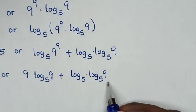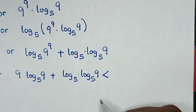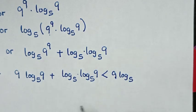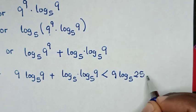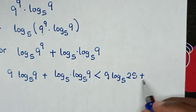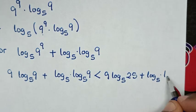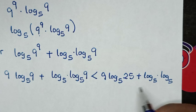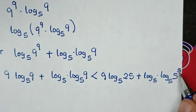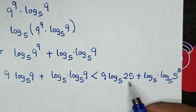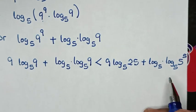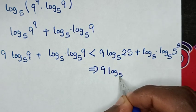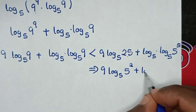We compare these logarithms. The right side is 9 times log base 5 of 9, which is obviously less. On the left we have 5 power 5. We replace 5 power 5 with 25, since 25 is greater than 9, making it easy to simplify. So the right side becomes 9 times log base 5 of 25, since 25 equals 5 squared.